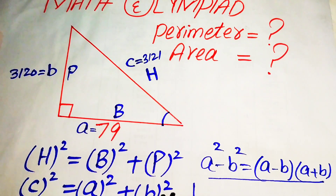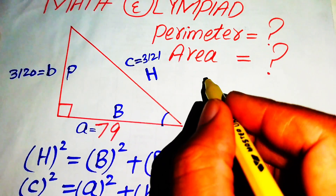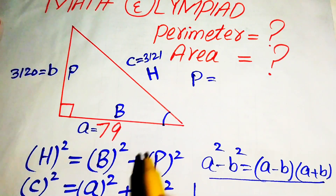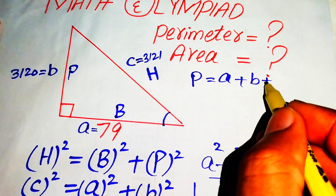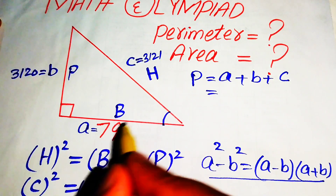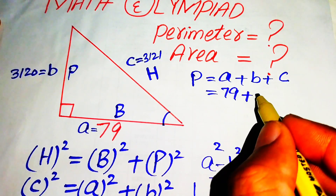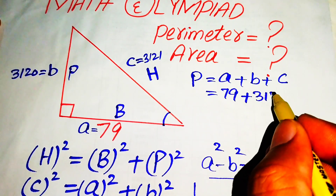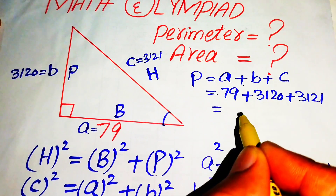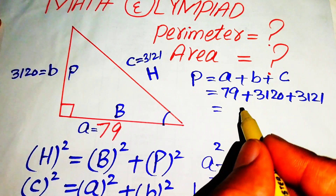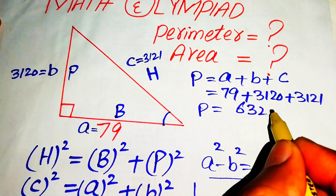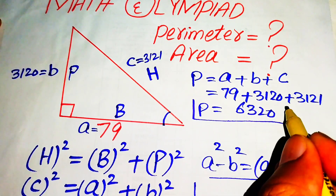Now we find the perimeter of the triangle. The perimeter equals the sum of all three sides. We have a = 79, b = 3120, and c = 3121. Summing these three values gives a perimeter of 6320. This is our required perimeter.